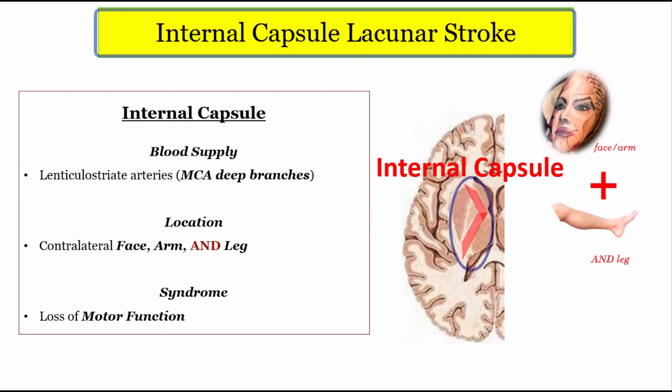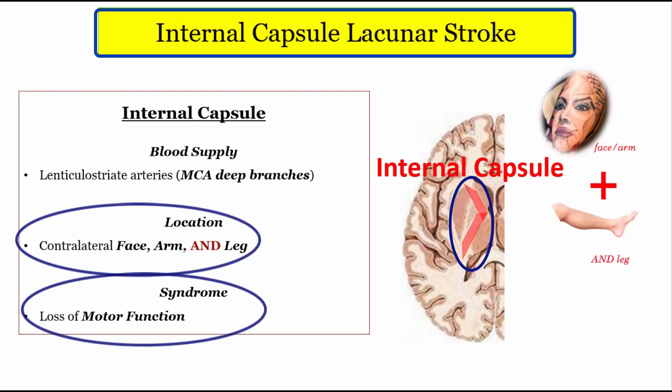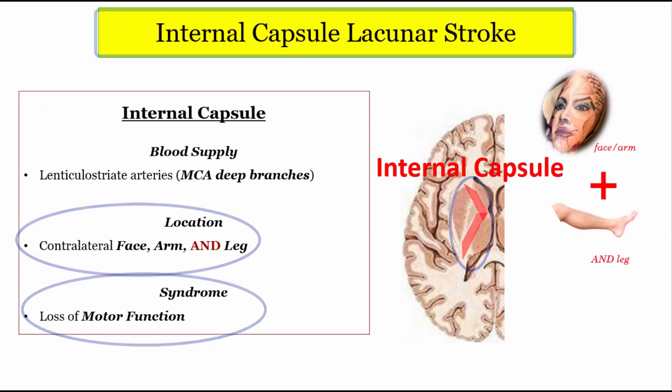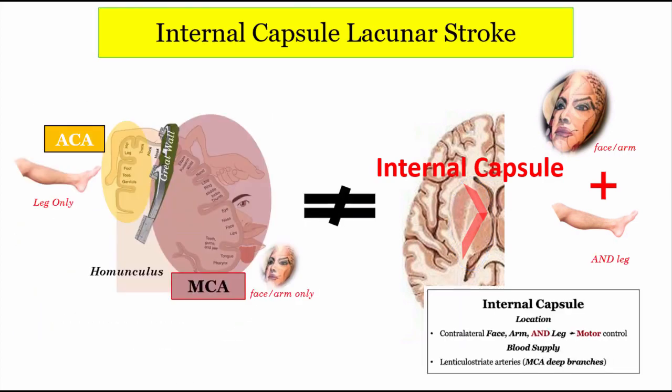Moving into our first presentation of lacunar stroke: this patient will present with paralysis of the right side of their entire body — face, arm, and leg — with no other signs or symptoms. The big tip-off here is that it paralyzes both the face plus arm and the leg. Think back to the homunculus with its great wall between the arm and leg, and you'll recall that an ACA or MCA occlusion can't do that on step one.